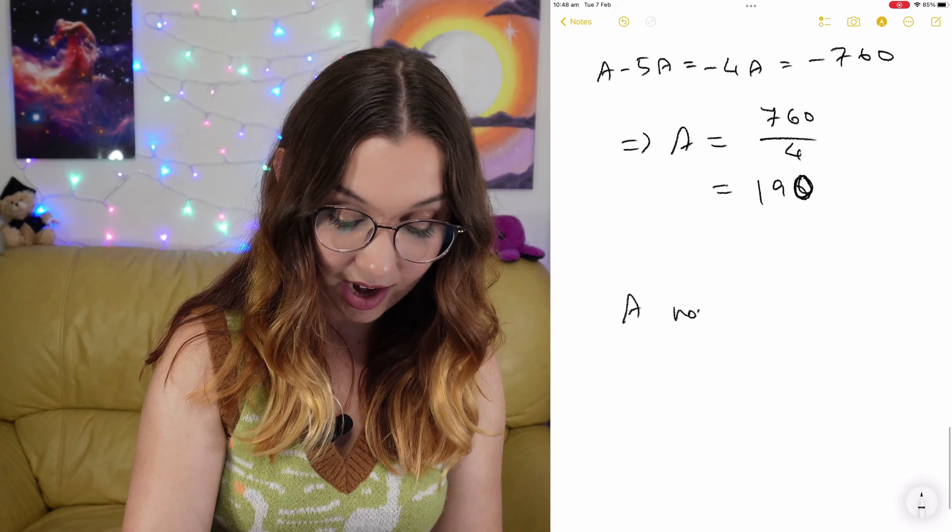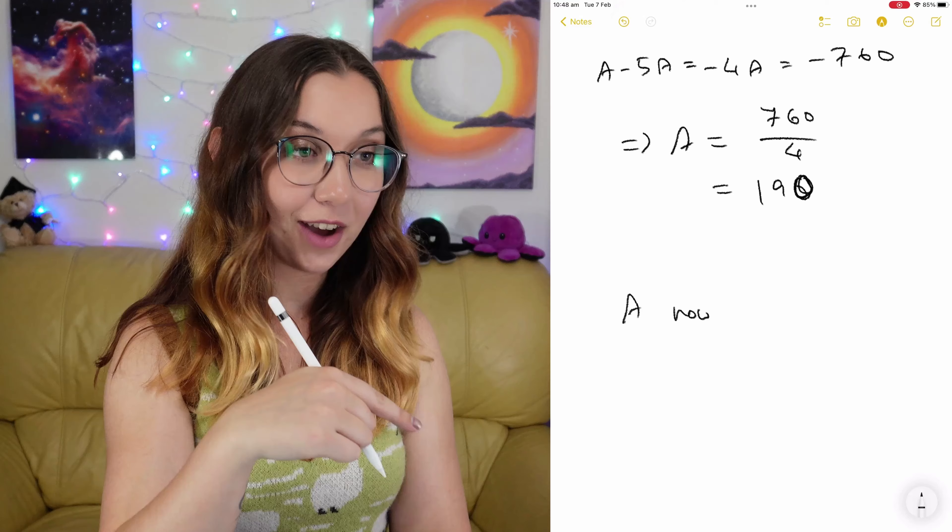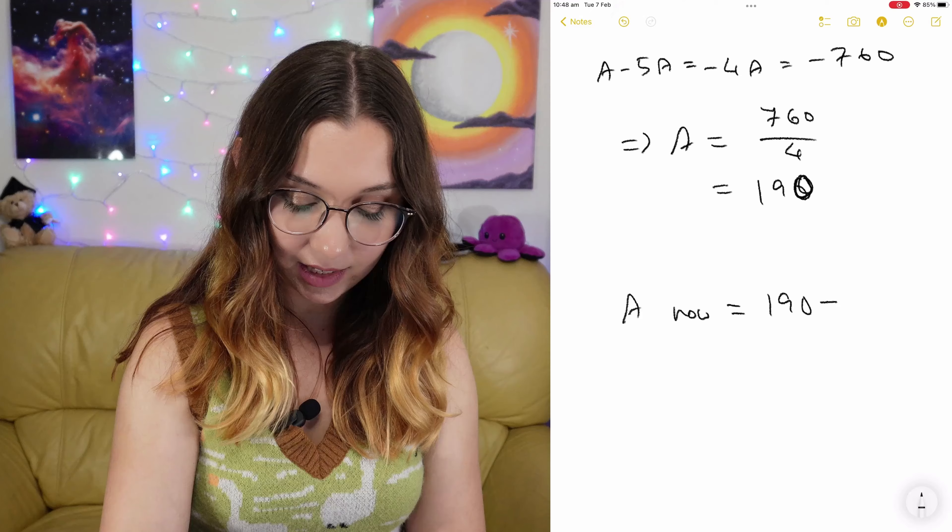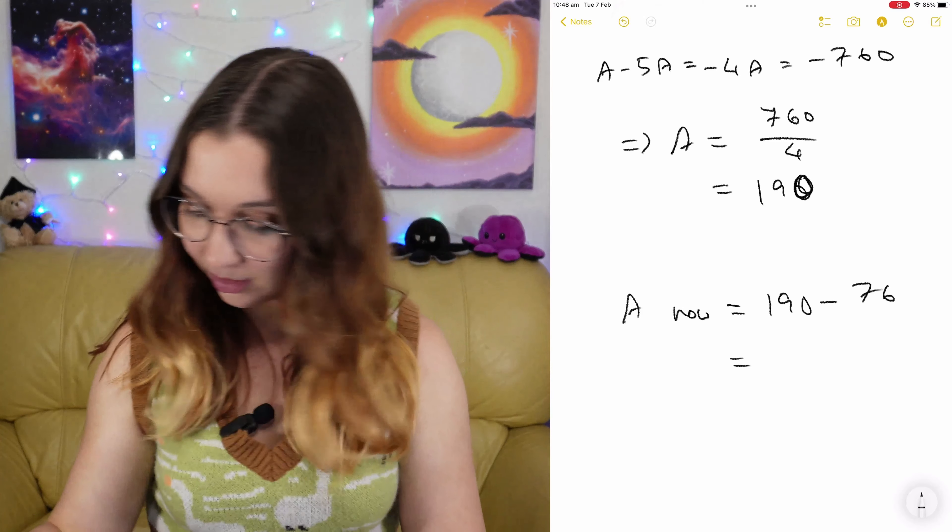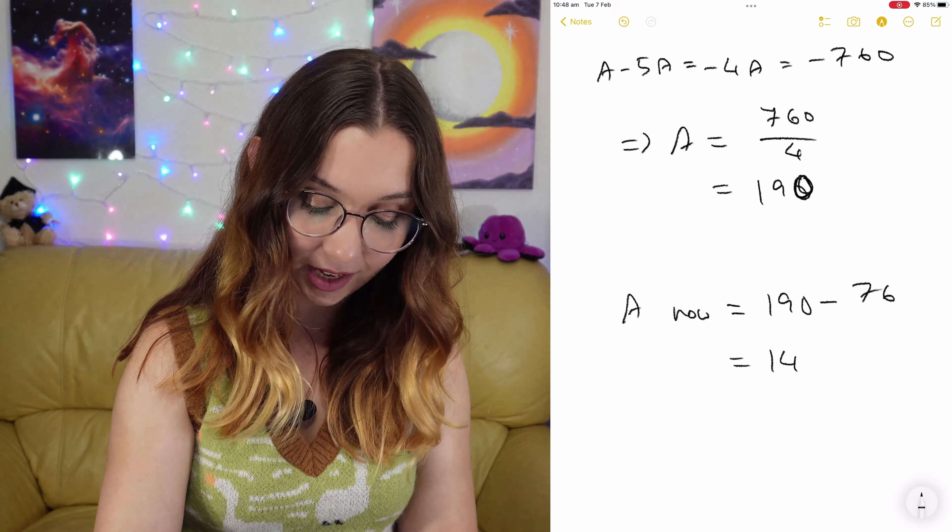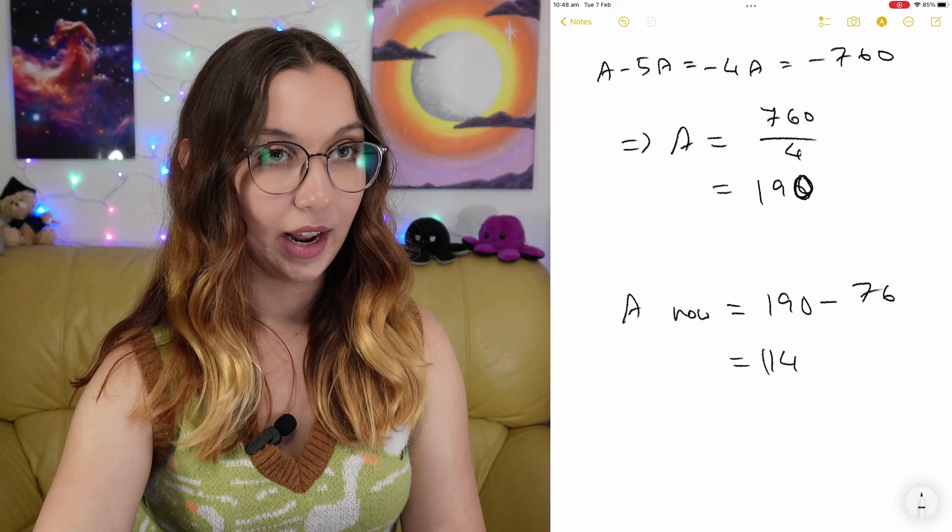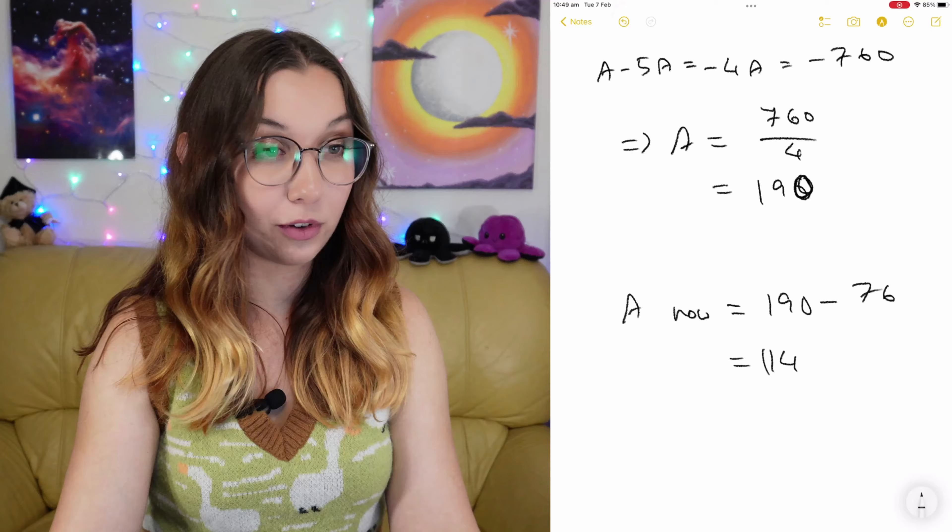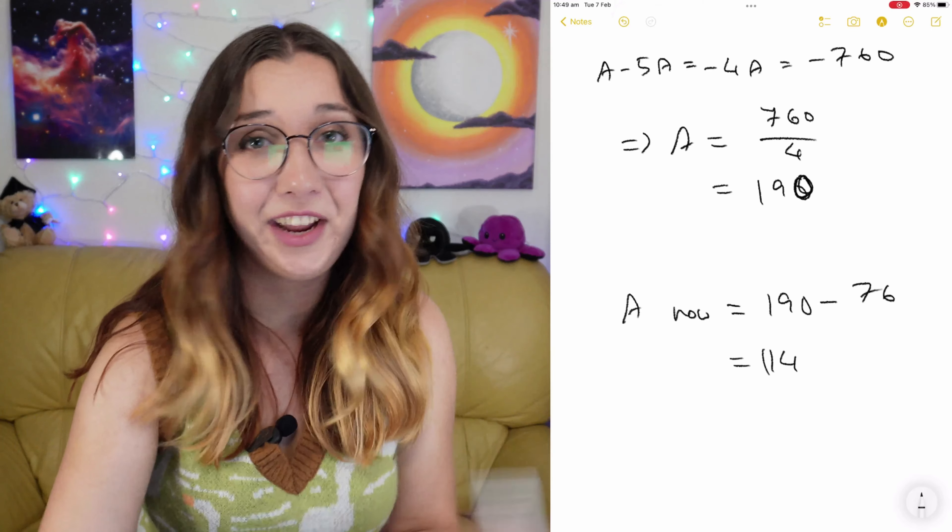So A now, after taking out 76 pens from A and putting them into box B, is equal to 190 minus 76, which is 114 pens. I sincerely hope that that is the answer. 114 is the answer from other people. Thank goodness. I can do math. I was able to do math work given to 10-year-olds. Probably made it too complicated, but I did it.